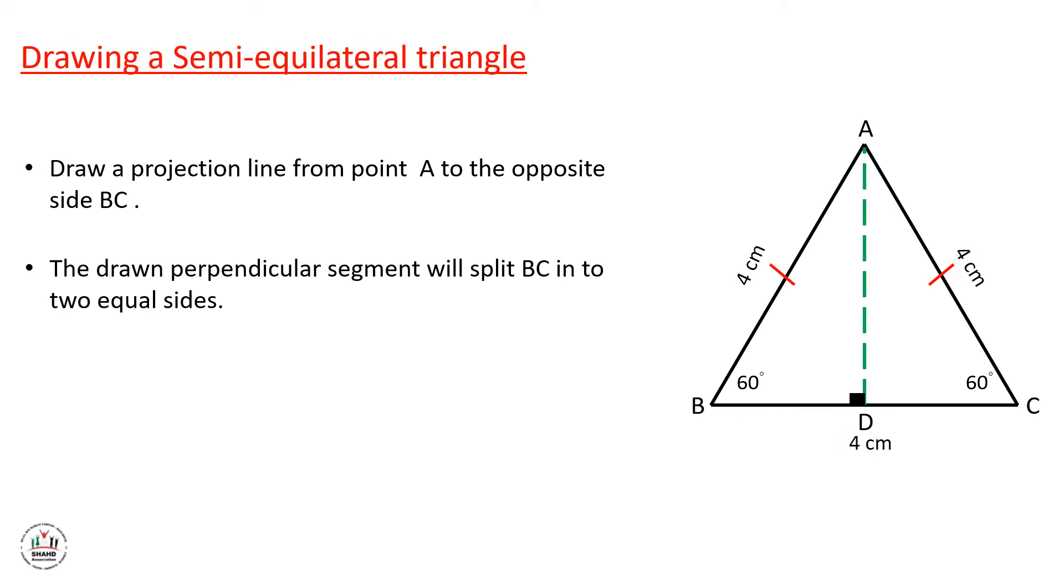Because this is an equilateral triangle, the perpendicular from the vertex A will be a perpendicular bisector to BC. It will be two equal sides. BD will be equal to DC.